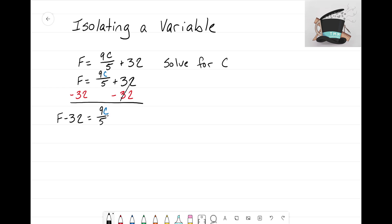Already you can see that the right side has become less cluttered and I'm very close to getting to C. Now what we have going on here is we have C being multiplied by 9 and being divided by 5. Now I want to undo the fact that C is being divided by 5.